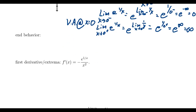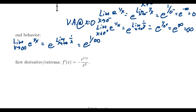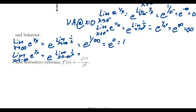For end behavior, the limit as x approaches infinity of e to the 1 over x: by continuity, take the limit of 1 over x as x approaches infinity, which is 1 over infinity, giving e to the 0, which equals 1. Similarly, the limit as x approaches negative infinity: 1 over negative infinity is still 0, so we again get e to the 0, which equals 1. Therefore this function has a horizontal asymptote at y equals 1.